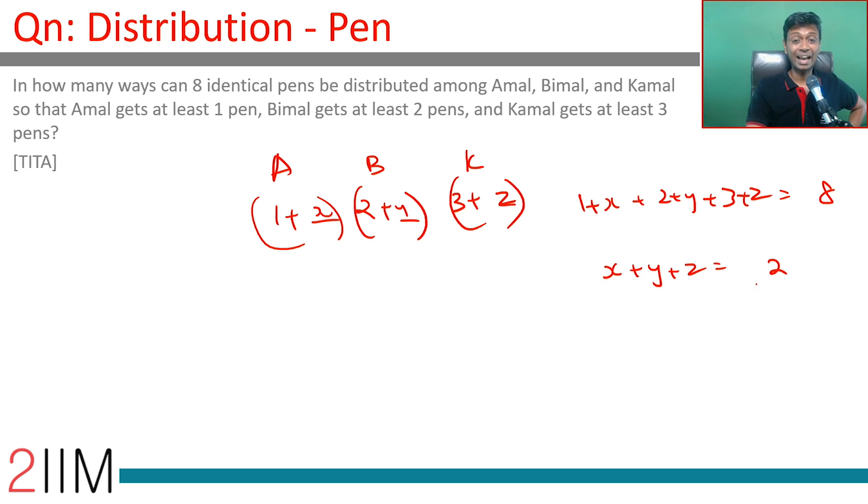And x, y and z have to be whole numbers. Or we can write this as x plus 1, y plus 2, z. In this case we want x plus y plus z equal to 8 minus 3 which is 5.